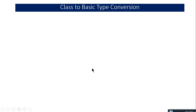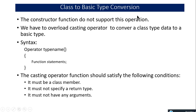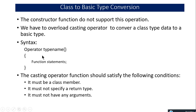Now let's continue with the next topic: class to basic type conversion. If I have an object containing the time and I want to convert it back into a basic type, this conversion cannot be performed using a constructor function. We have to overload the typecast operator. In that same time class, I'll write an operator function to do the typecasting. The operator function must satisfy three conditions: it must be a class member, it must not specify a return type — not even void — and it must not have any arguments.